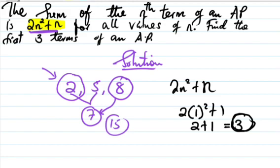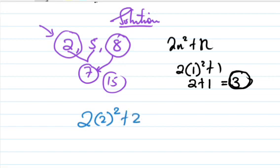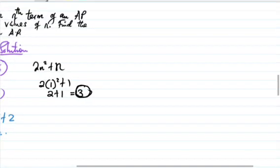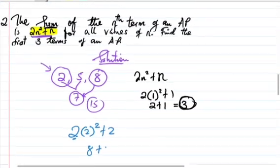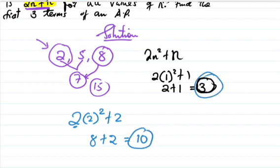To find the sum of two terms, we put n equals 2. So it's 2 times 2² plus 2. Two squared is 4, 4 times 2 is 8, plus 2 equals 10. That's the sum of two terms.